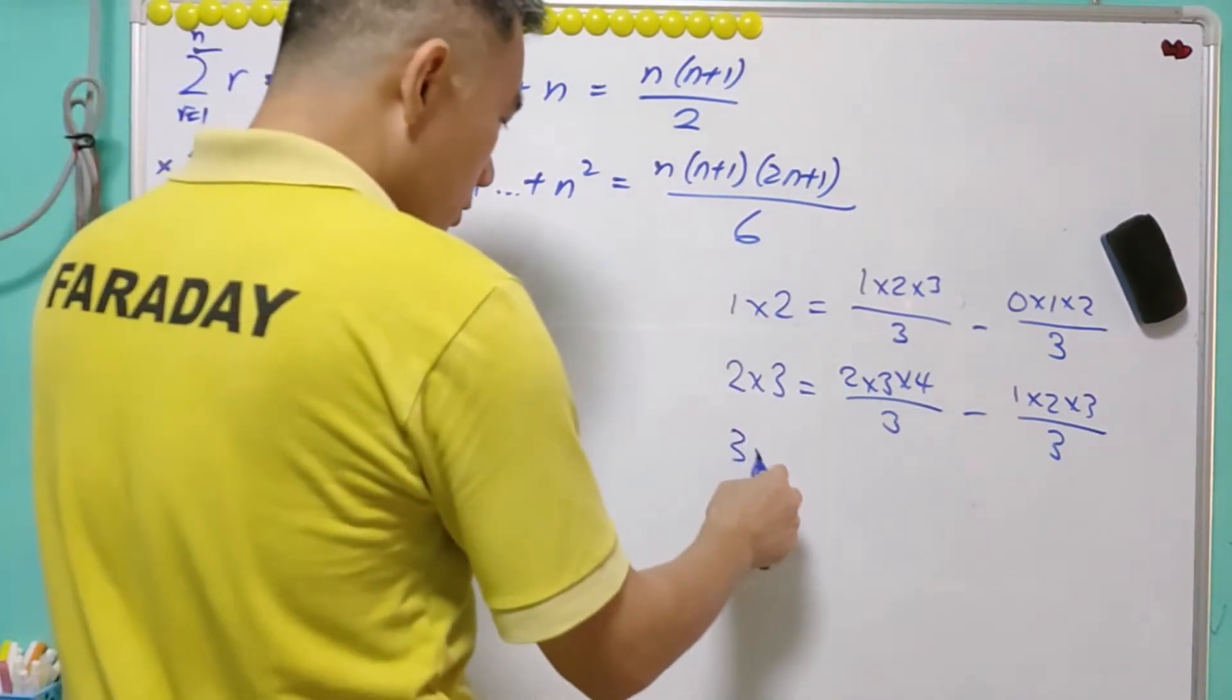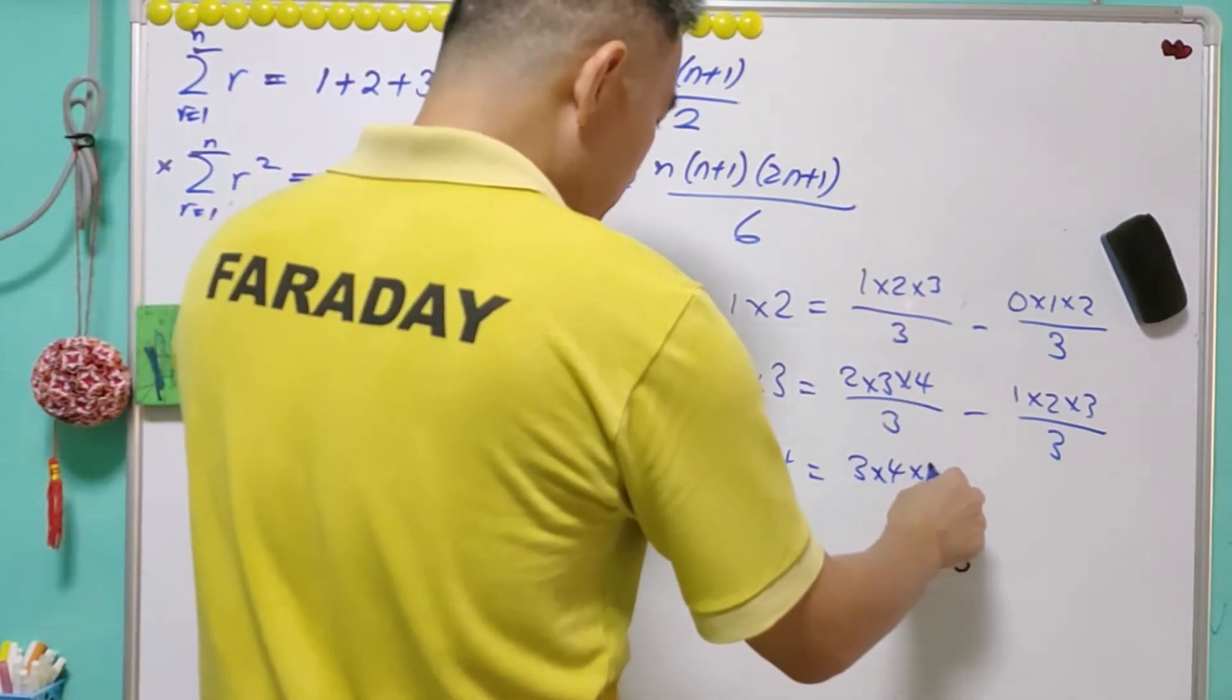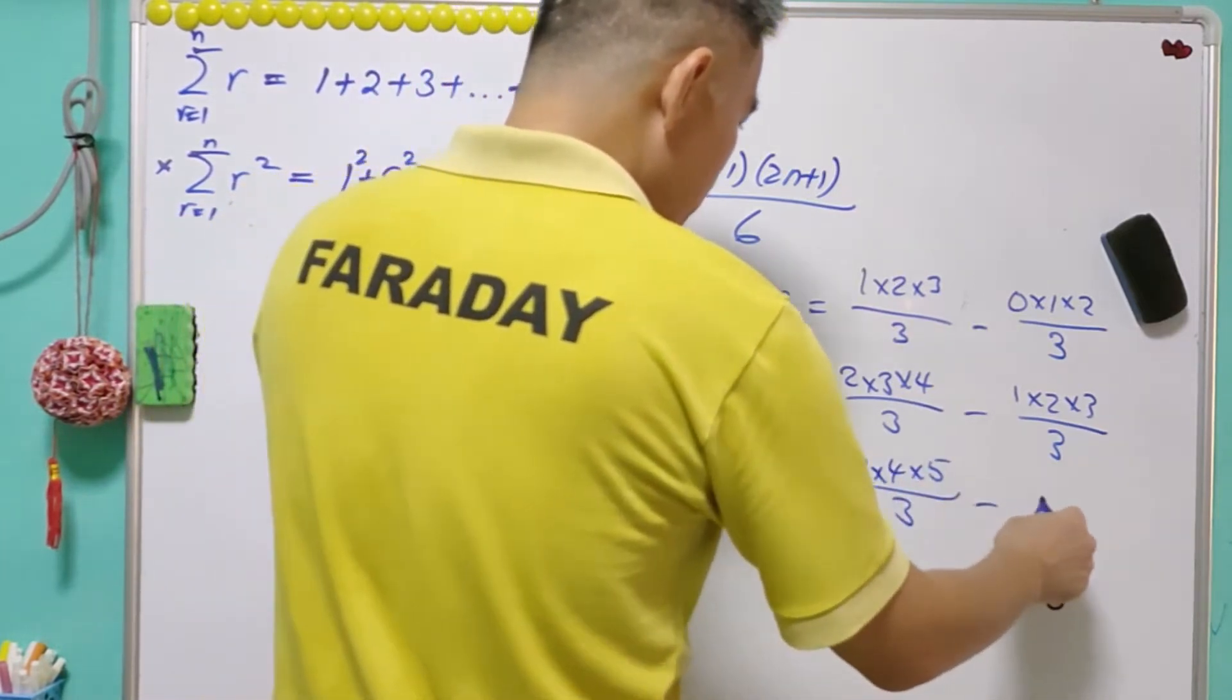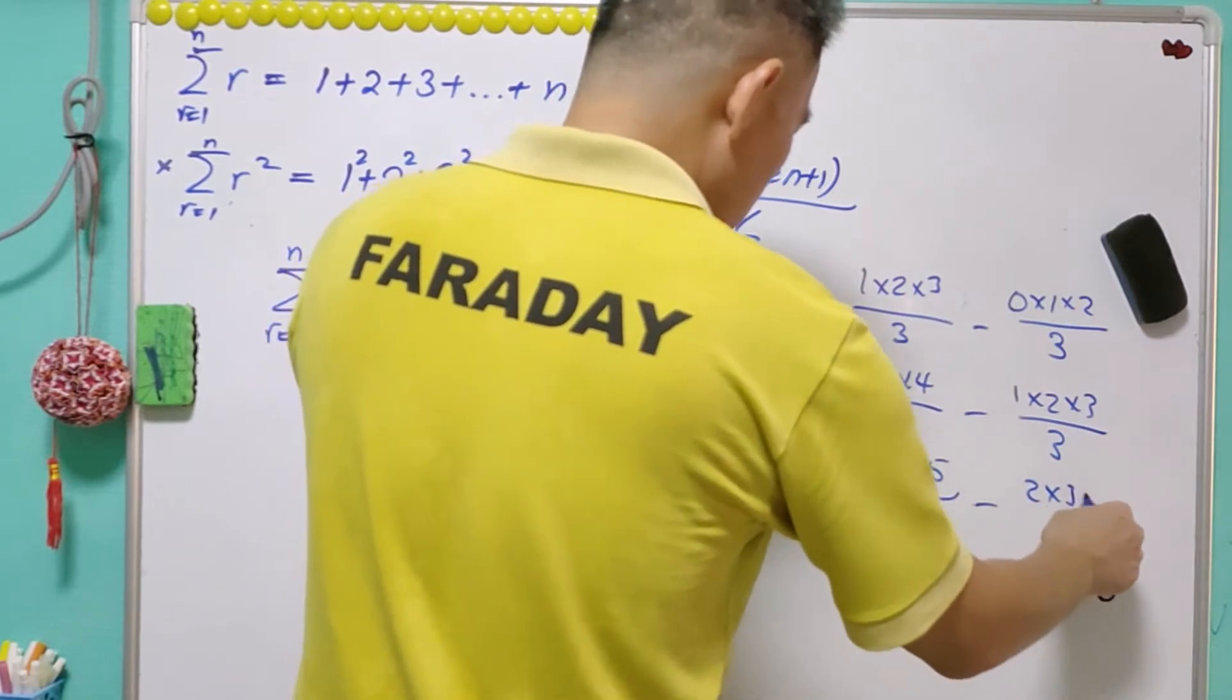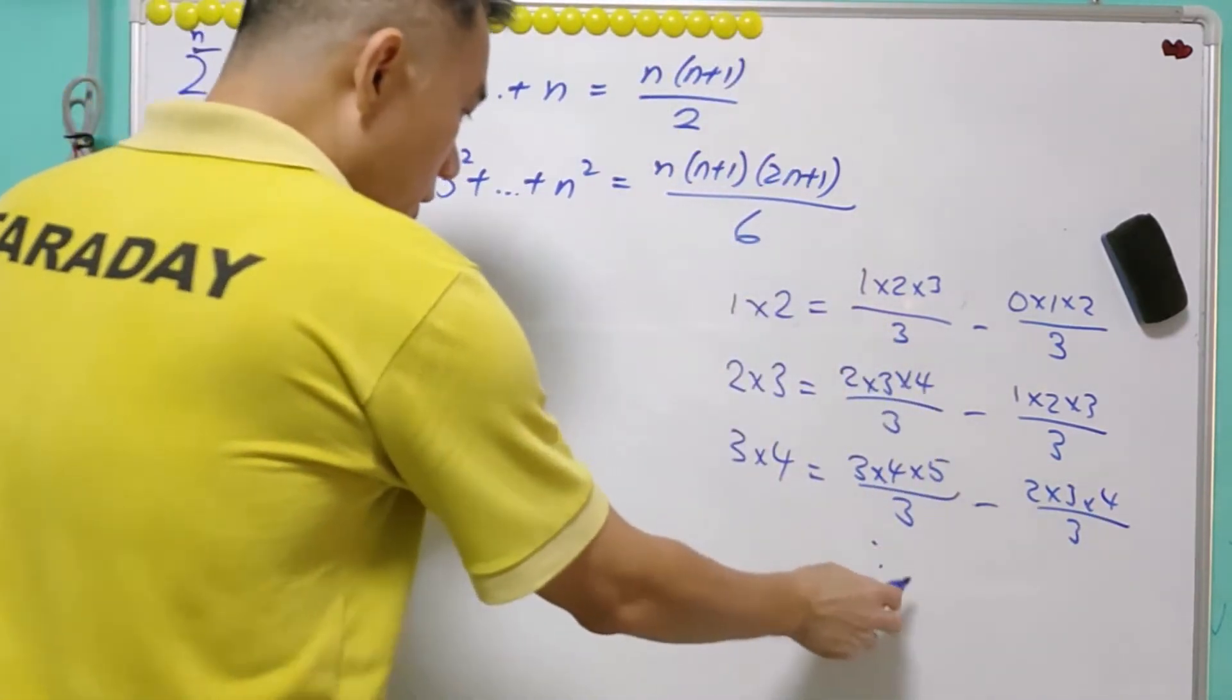And 3×4 is equal to 3×4×5 over 3, minus 2×3×4 over 3. And this is always true.